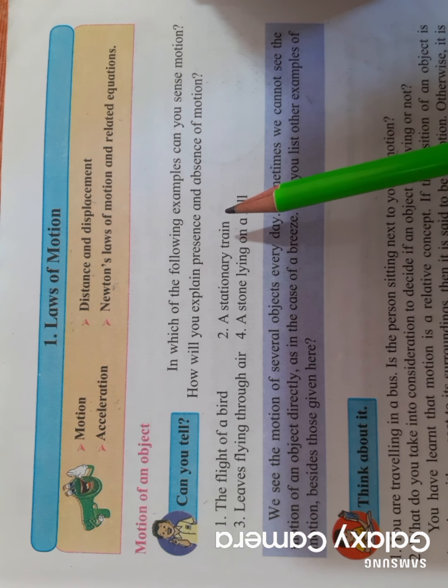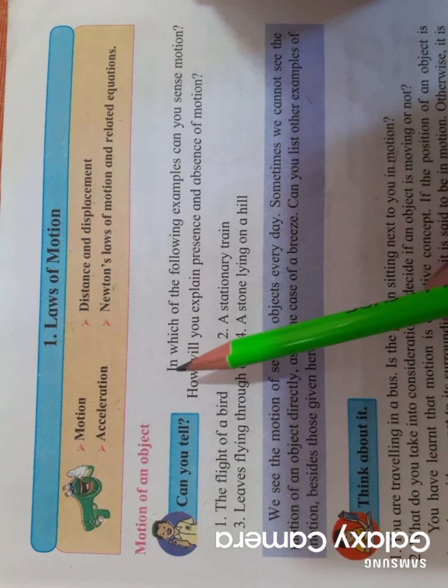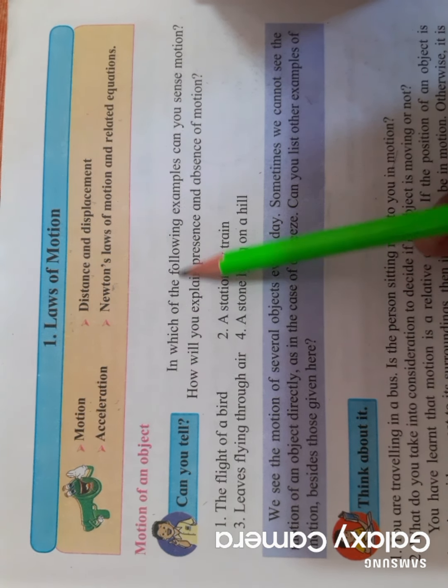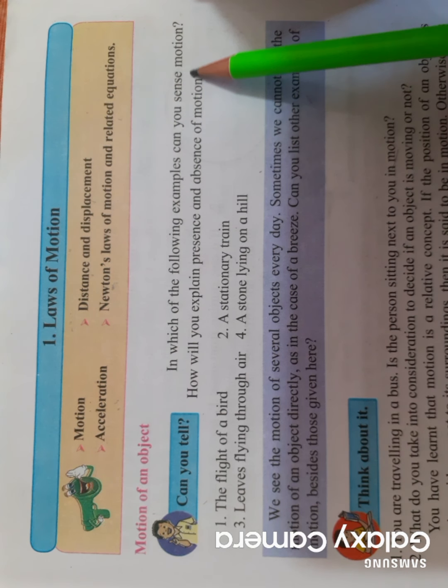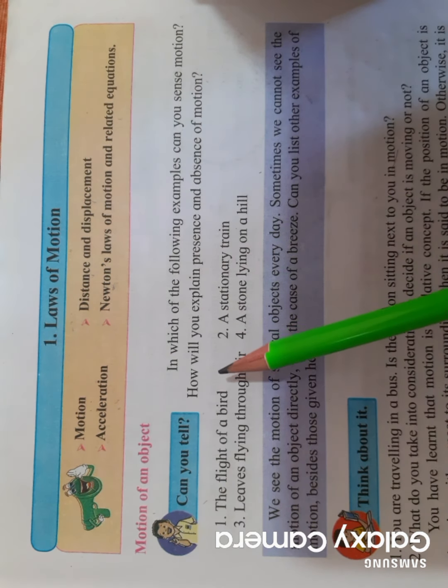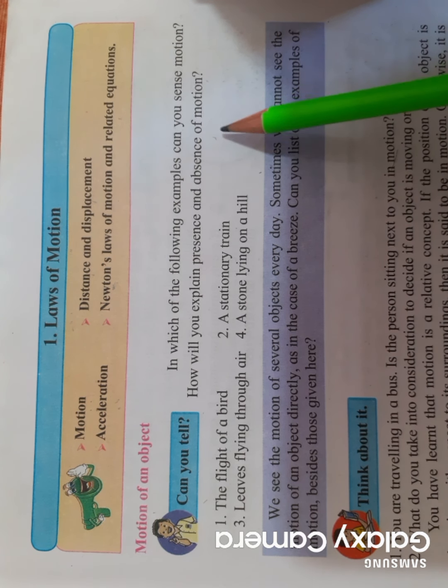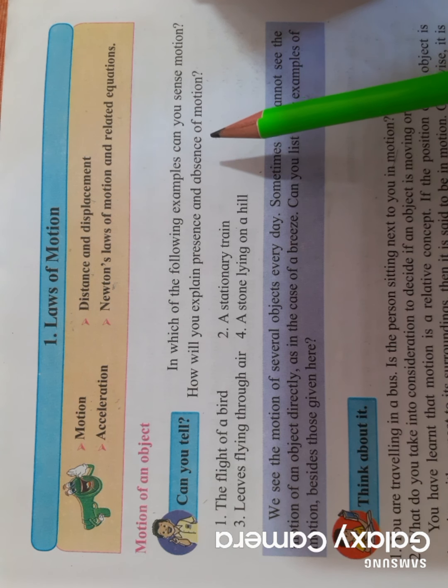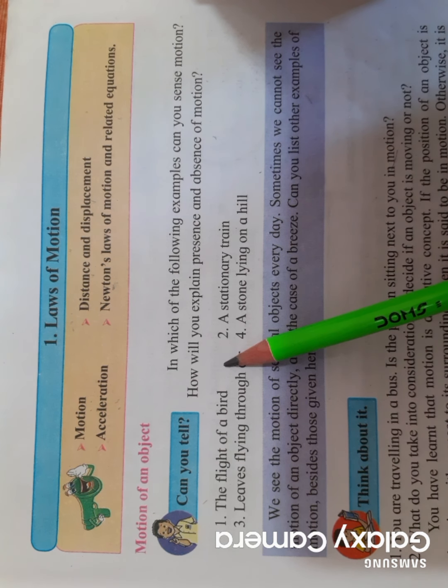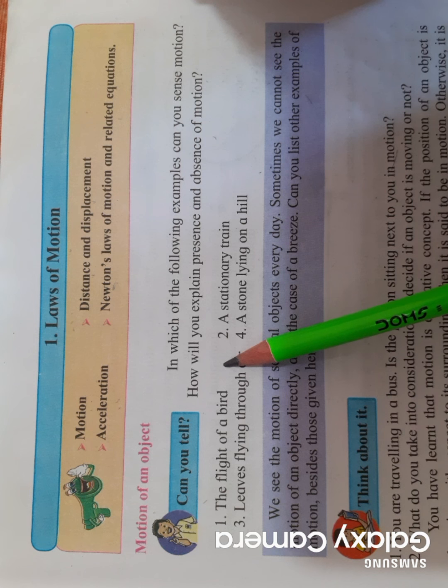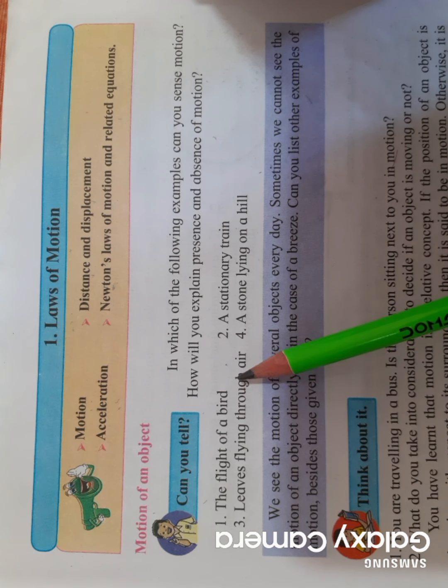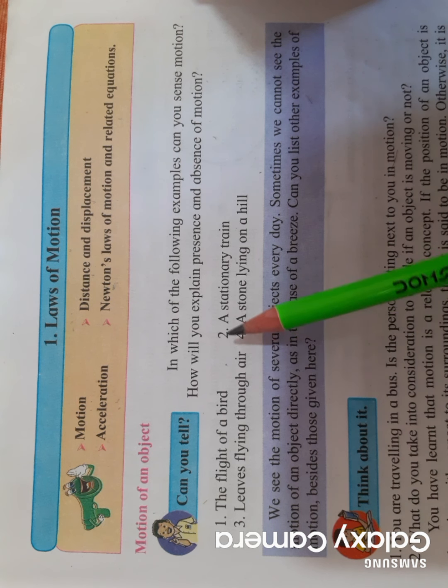What are they asking? In which of the following examples can you see motion, and how will you explain the presence or absence of motion? We need to understand two basic questions: first, how will you say whether motion is there? Second, why are you saying that motion is there or not?